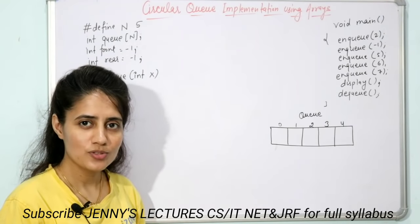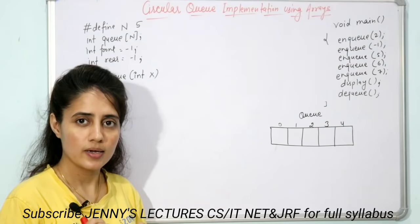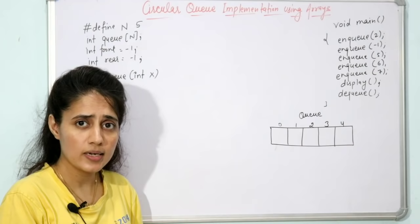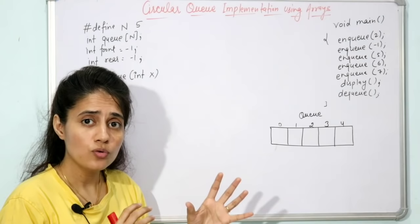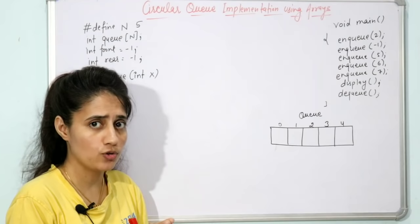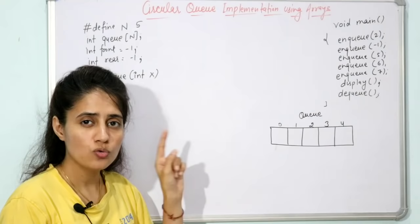In this lecture we are going to see what a circular queue is and how to implement it using arrays. We have already discussed how to implement a linear queue using arrays as well as using linked list. In that video on queue implementation using arrays, we discussed a major drawback of the linear queue. To overcome that drawback, the circular queue concept comes into picture.